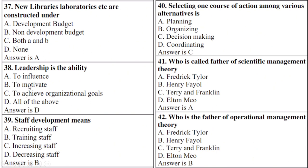Staff development means — right option is B: training staff. Selecting one course of action among various alternatives is — right option is C: decision making.